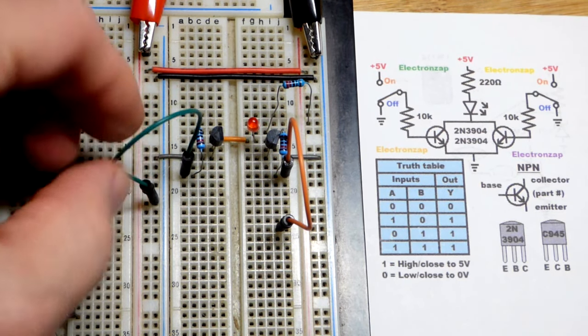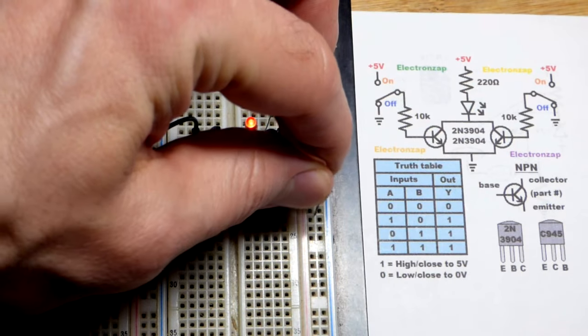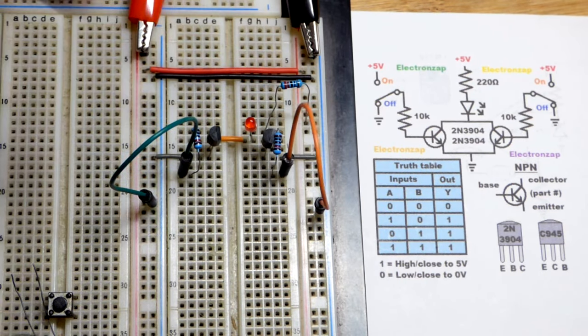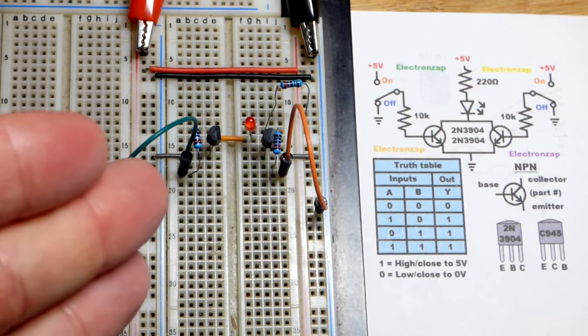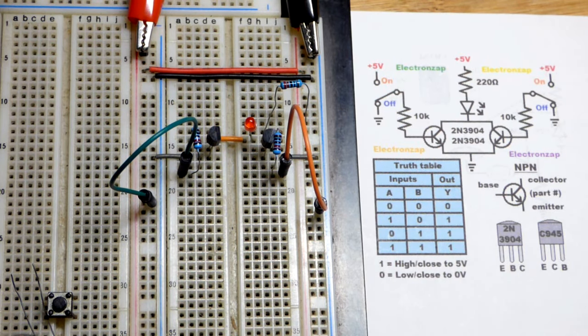So if I put that over to the negative supply there, and then this one to the negative supply, right now we have two off transistors, two low inputs, and the LED is off right there.